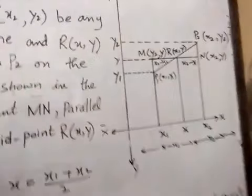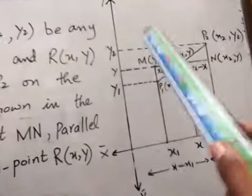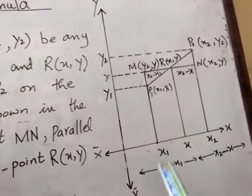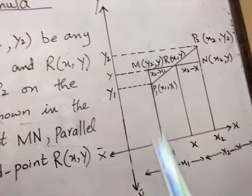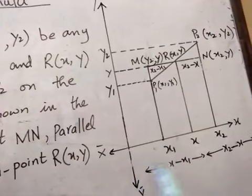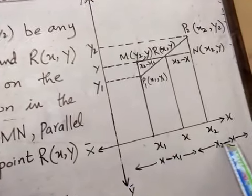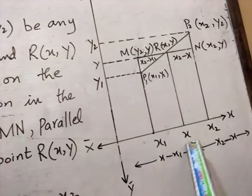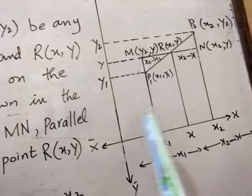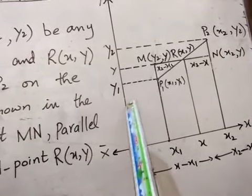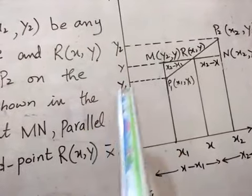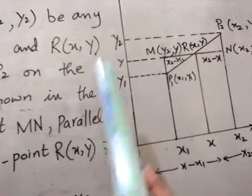Look at the figure. This is the x-axis and y-axis — this is a plane. Here on the x-axis, x1 and x2 are two points and x is their midpoint. And on the y-axis, y1 and y2 are two points and y is their midpoint.